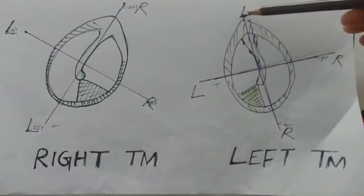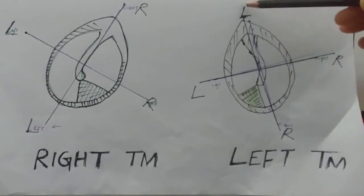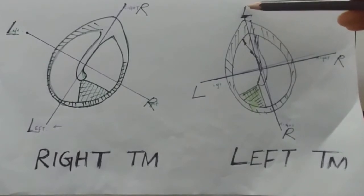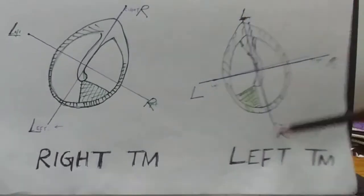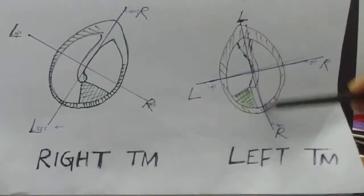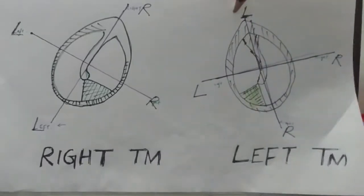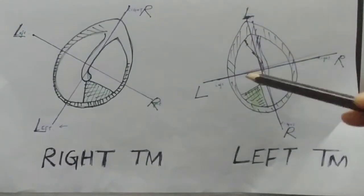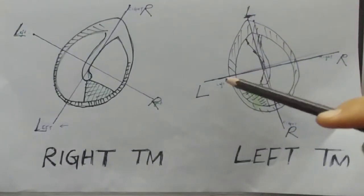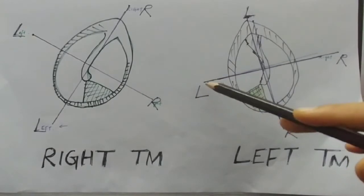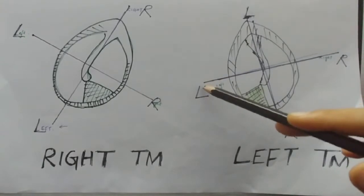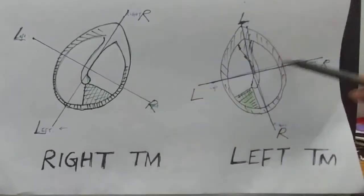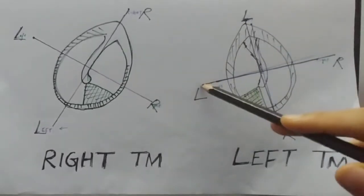For the left tympanic membrane, we will draw a vertical line which is from left to right, up to down. And the horizontal line is from left to right side, down to up.